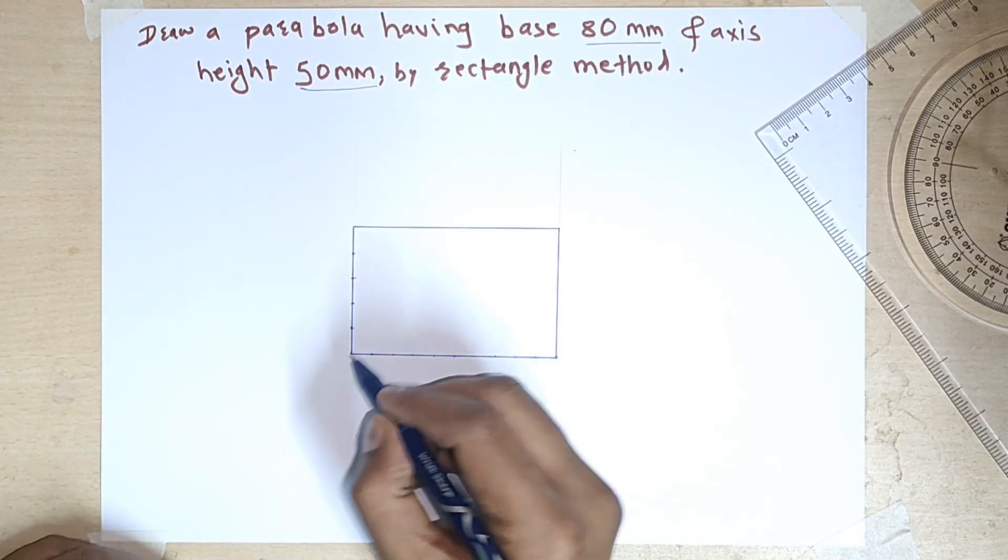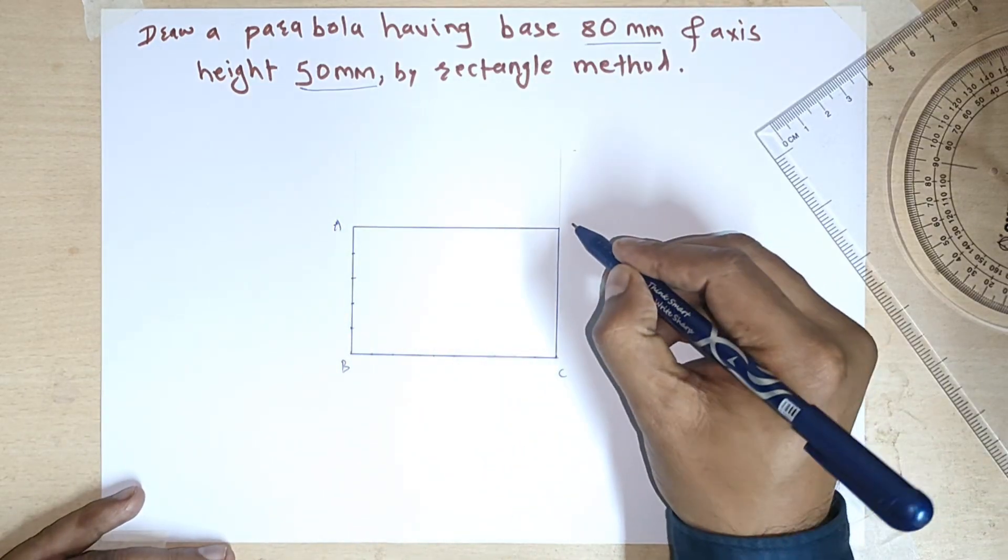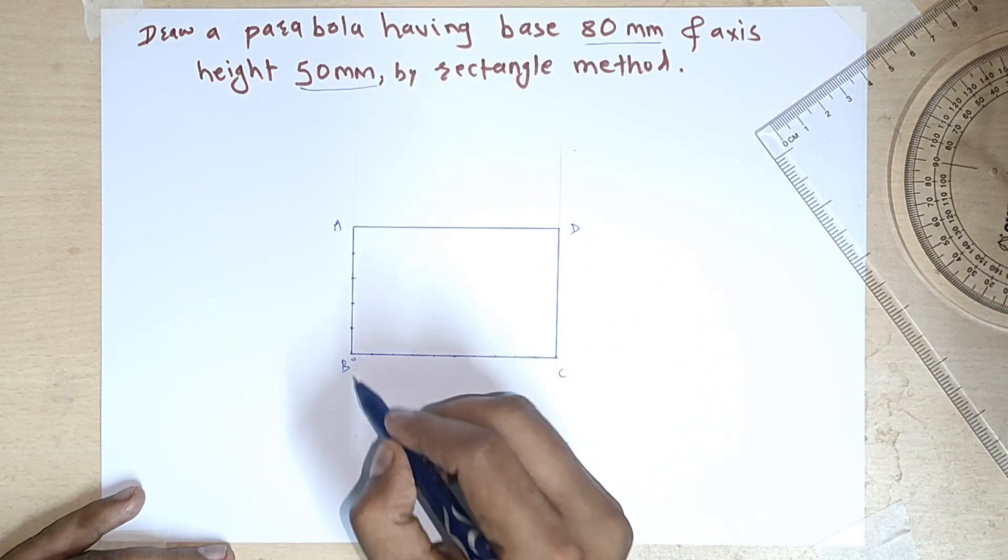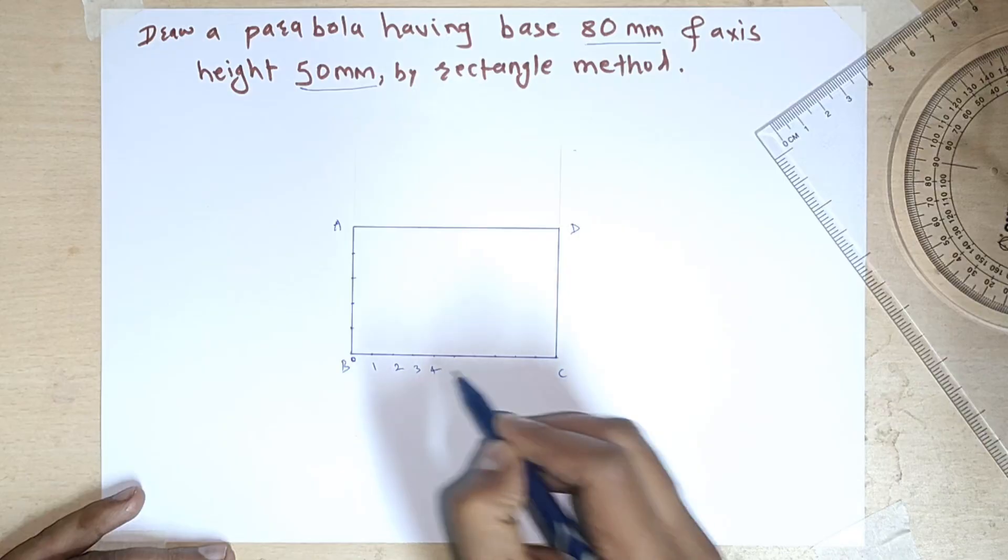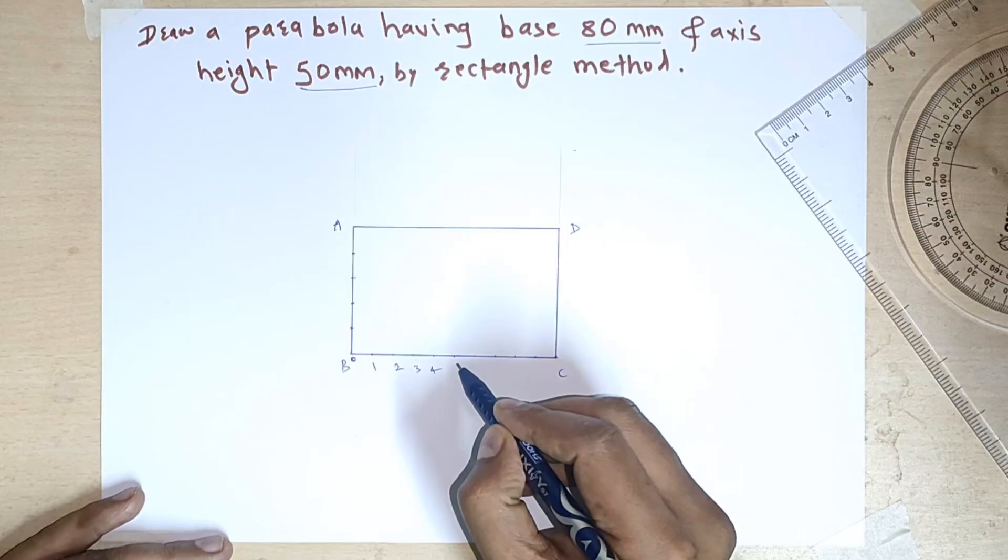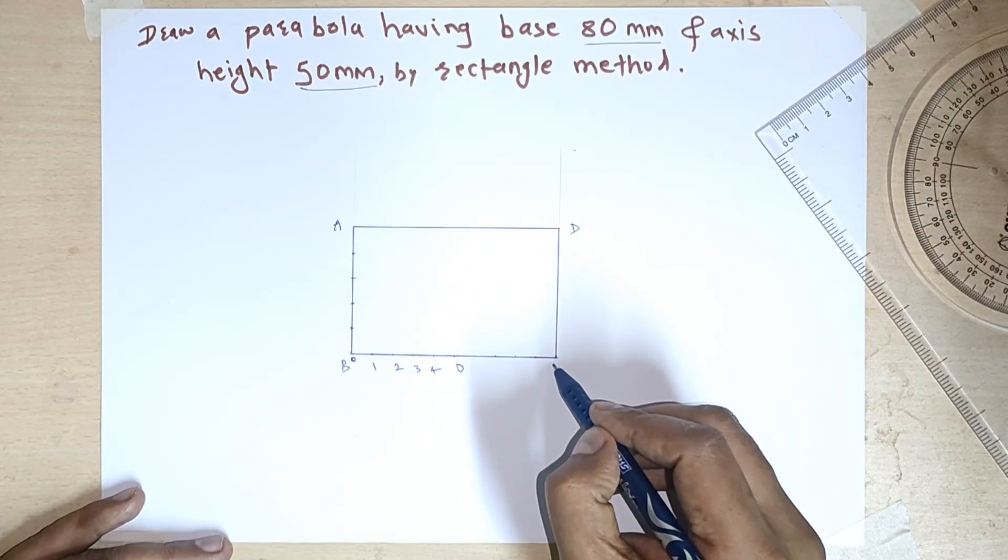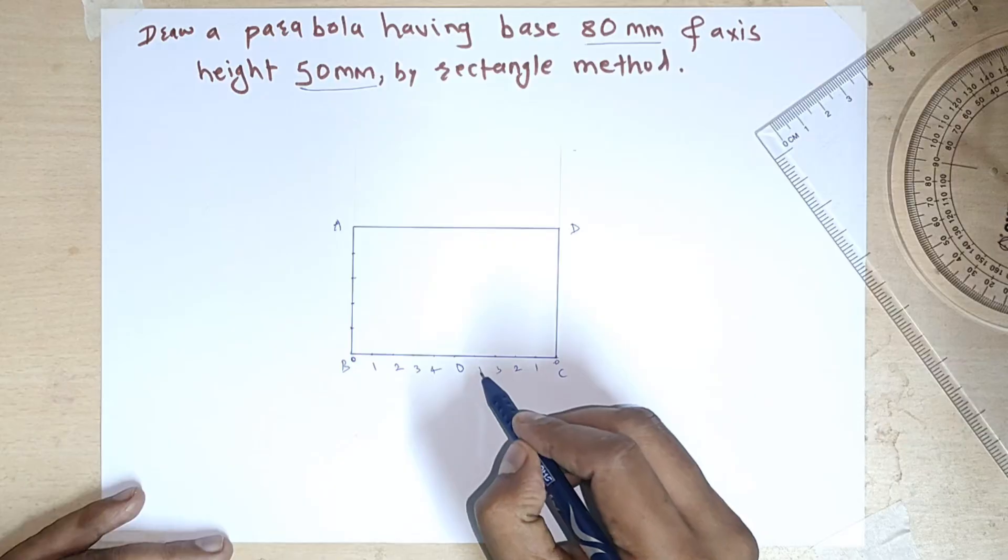So this is A, B, C and D. This is 0, 1, 2, 3, 4 and this is the 5th part. That is our 0 point. Now this is 0, 1, 2, 3 and 4.